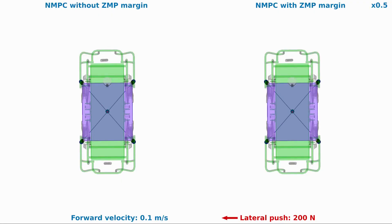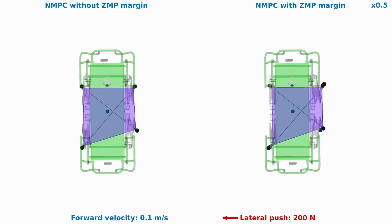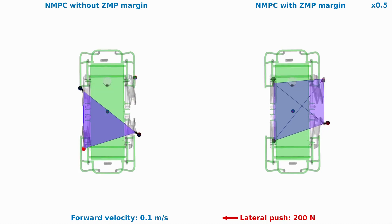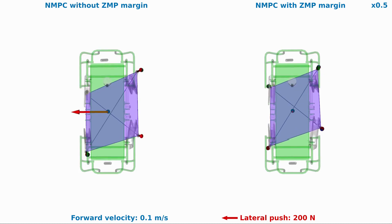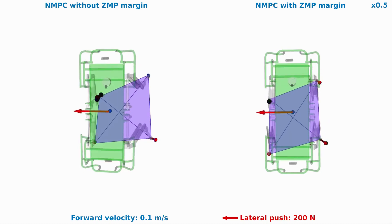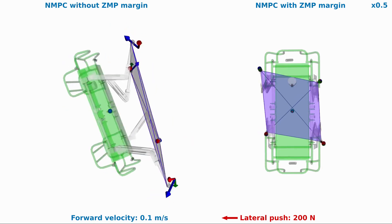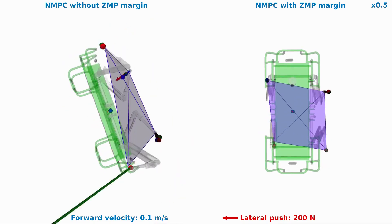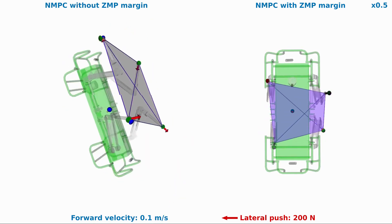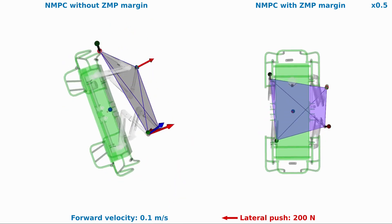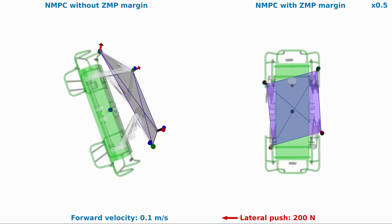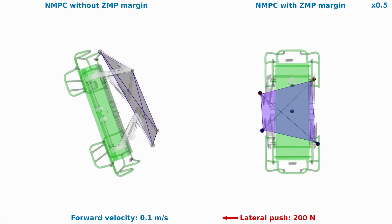In a second simulation, we show how NMPC ensures locomotion stability of the HiQ robot by maintaining an essential ZMP margin. When pushed with a lateral force of 200 N, the robot falls when there is no ZMP margin. On the other hand, with a sufficient ZMP margin, it walks stably even in the presence of an external disturbance.